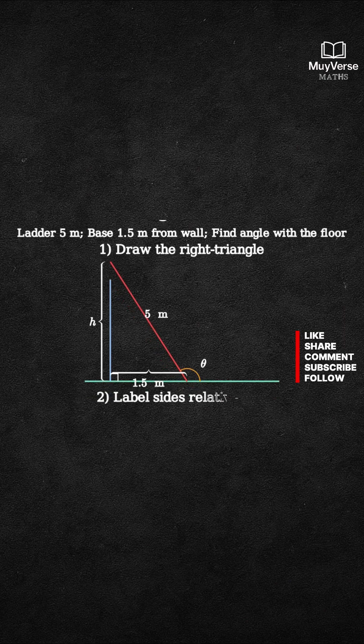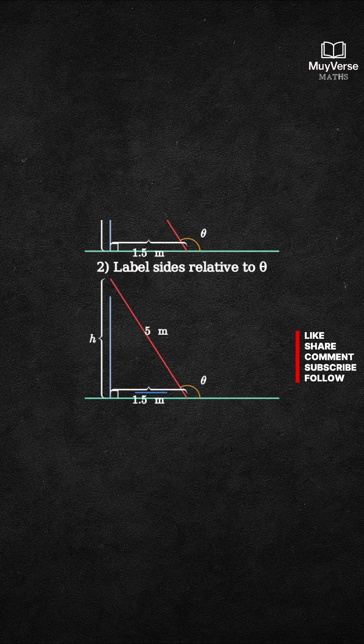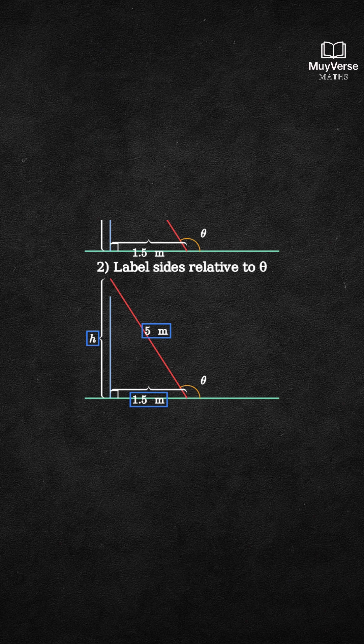Step 2. Identify sides relative to theta. The adjacent side to theta is the base, 1.5 meters. The hypotenuse is the ladder, 5 meters. The opposite side is the height h on the wall.